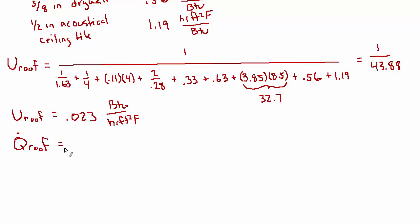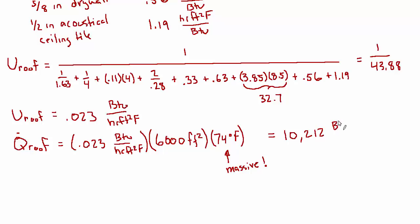Q dot roof is going to be U A delta T, where delta T is the cooling load temperature difference. So 0.023 BTU per hour foot squared degree F times the area of the roof, which is 6,000 square feet. And the CLTD that we assumed was 74 degrees Fahrenheit. And I mentioned it before, but I'll mention it again. That is a massive delta T. But it's July, and it's 4 p.m., so there's an incredible amount of solar heat load on the roof of this building.